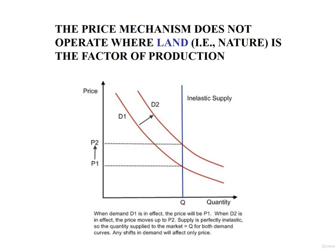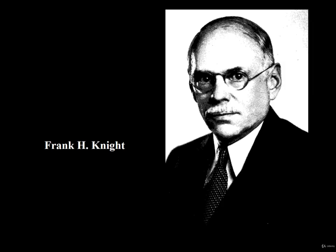Where neoclassical economic theory fails, and fails miserably, is with its attempted application of the price mechanism to land markets. This is arguably the reason why the first generation of economists were compelled to remove land as a distinct factor of production. What economists could not explain away is that the supply of land is perfectly inelastic, which means the supply is inherently insensitive to changes in price. Rising land prices signal landowners to hold land for even higher price gains.